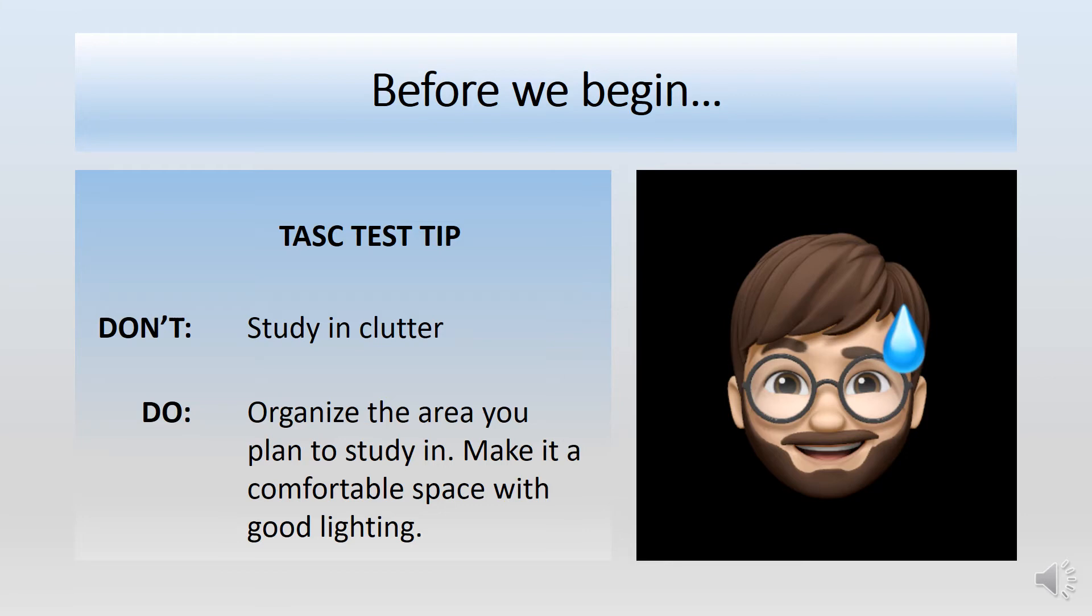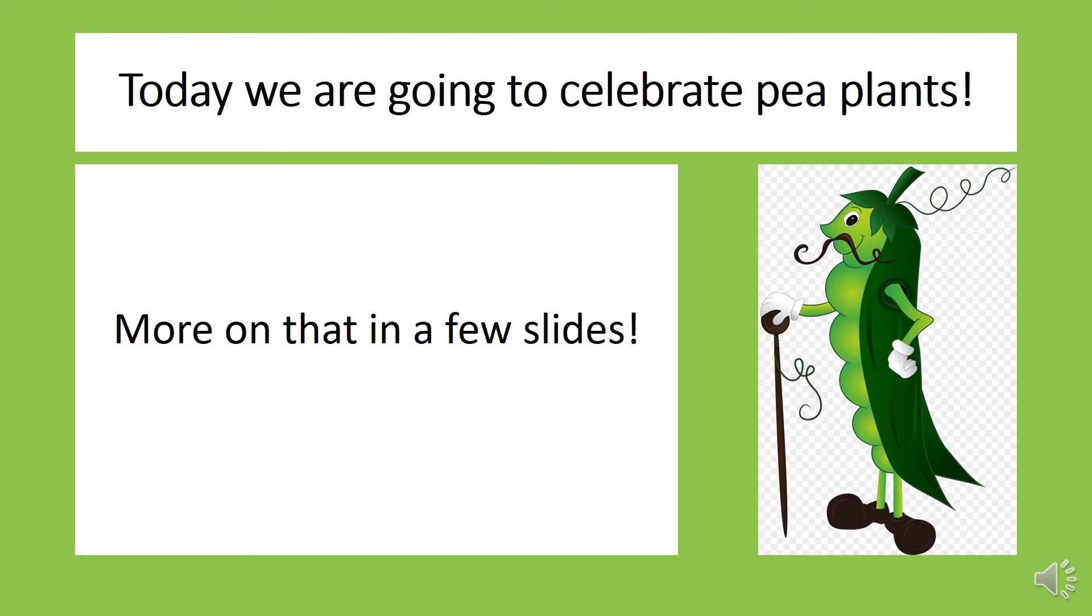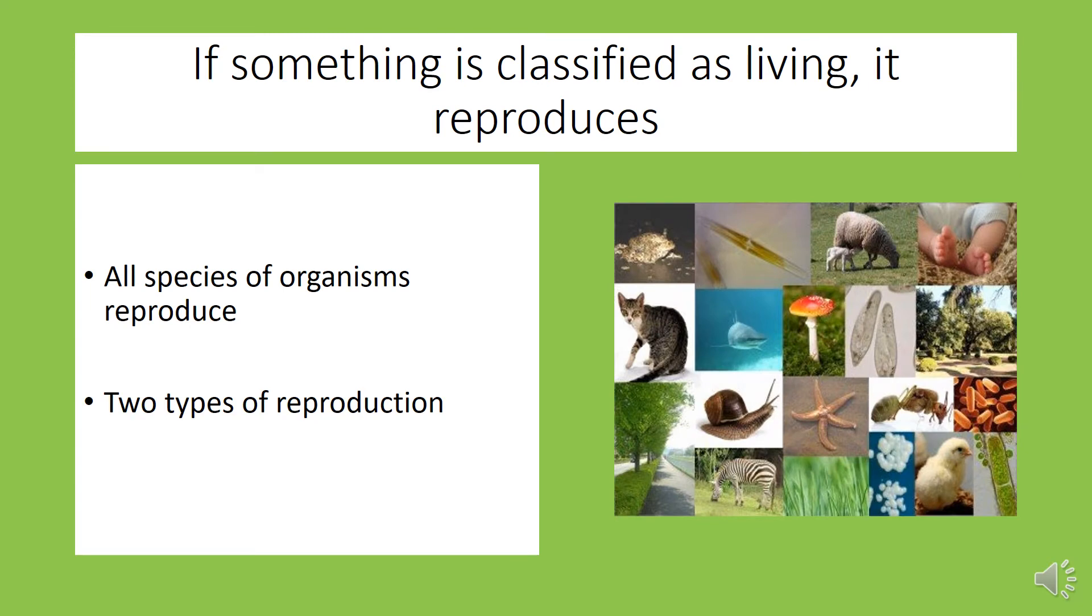Today we're going to celebrate one of the most important plants in the history of science. I'm looking at you, pea plant. This green beauty paved the way for our current understanding of reproduction and heredity. Business first though, the first thing we need to know is that all organisms reproduce. If something's classified as living, it reproduces.